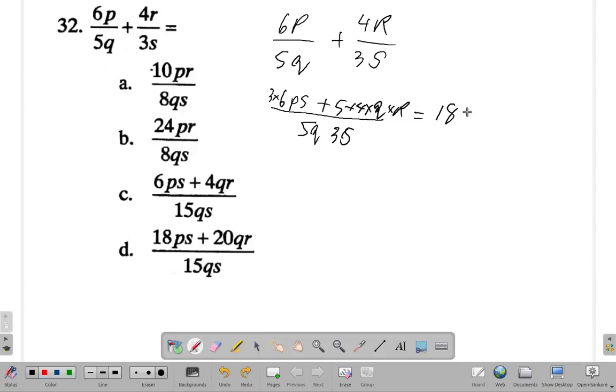3 times 6 is 18ps plus 5 times 4 is 20qr all over 5 times 3, which is 15qs. So it is D. That is the answer. So it's D. D is the answer for this.